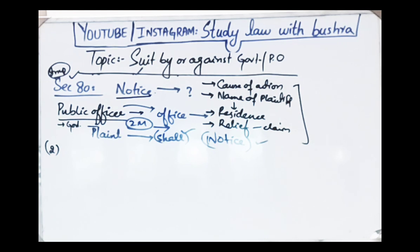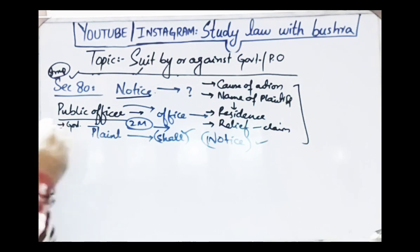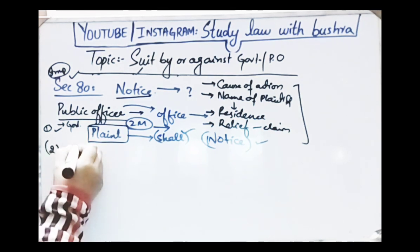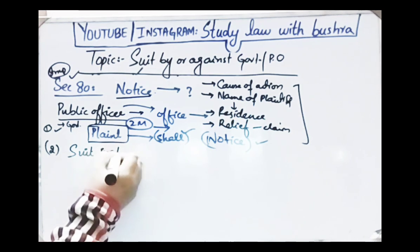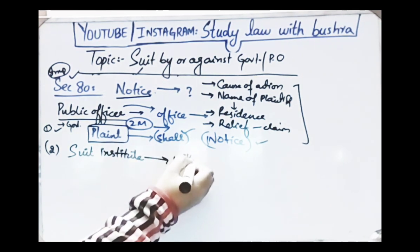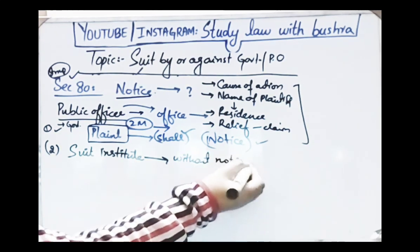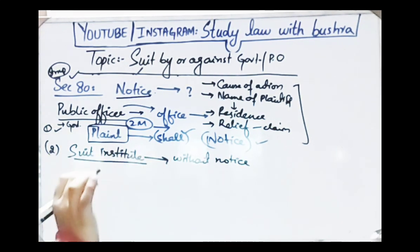Sub-section 2 states: where any suit is instituted without delivering or leaving such notice, or before the expiration of the said period of two months, or where the plaint does not contain a statement that such notice has been so delivered or left — the plaintiff shall not be entitled to any cost if a settlement regarding the subject matter of the suit is reached and the government or public officer concedes the plaintiff's claims within the period of two months from the date of institution of such suit.